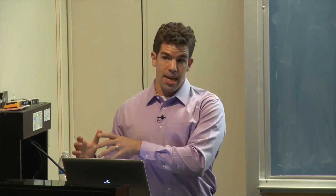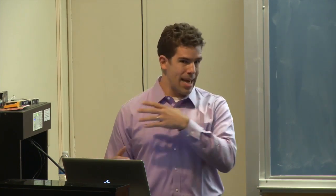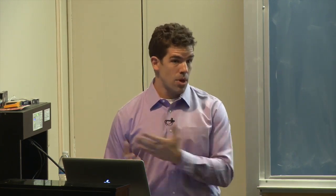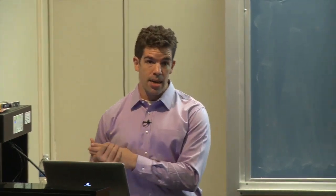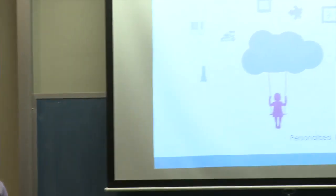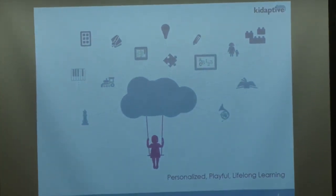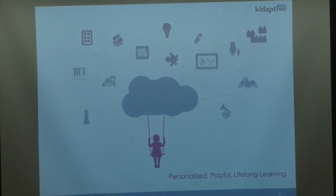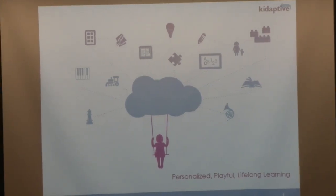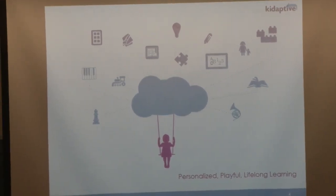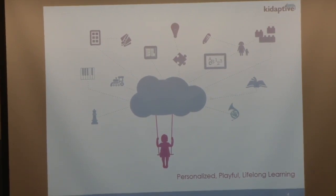The first phase was to build our own products and show that continuous embedded assessment could work — that kids playing these games over months or years would have their gameplay help us understand how they were developing. We use that information to do two things: first, we personalize the experience for the child, because what a two-and-a-half-year-old and a five-and-a-half-year-old can do are very different. This is made possible by our psychometric engine.